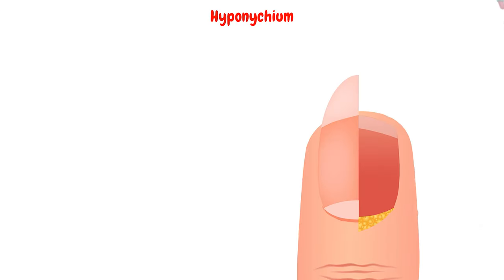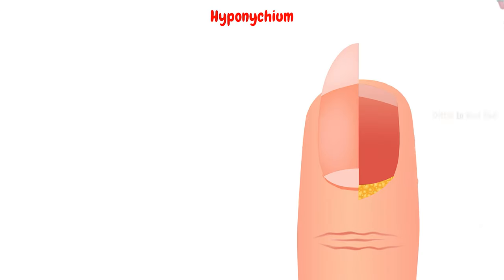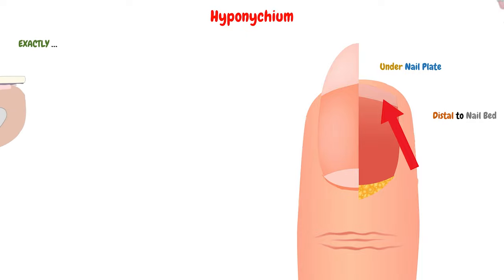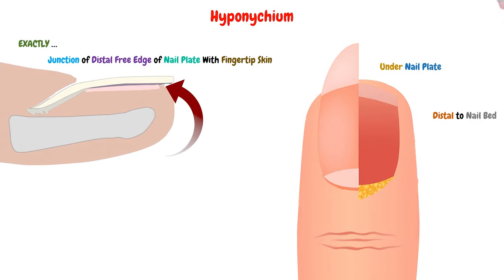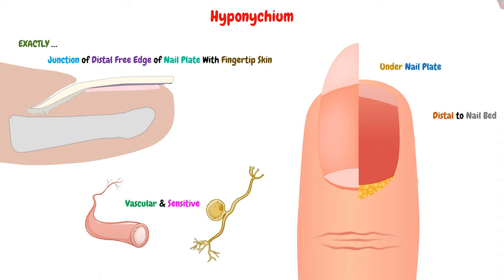The hyponychium is the area that exists distal to the nail bed and under the nail plate, exactly at the junction of the distal free edge of the nail plate with the fingertip skin. This area is very vascular and sensitive, because it is richly supplied with blood vessels and nerves.